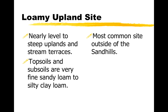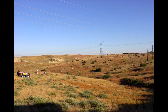Next we come to a group of sites with silty or loamy soils. These loamy soils will be very fine and powdery textured — not clay, which gets sticky, but loam with maybe a little bit of fine sand. Loam means it has a mixture of sand, silt, and clay. Loamy upland is the most common site outside of the Sandhills. These would be pretty level to somewhat steep and are not near the water table if you dig down. The topsoils and subsoils can be a very fine sandy loam to a silty clay loam. Here's an example of hills where the tops are going to be loamy upland sites.